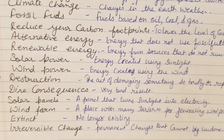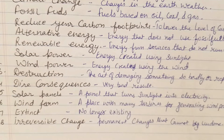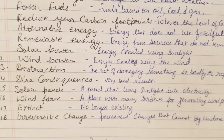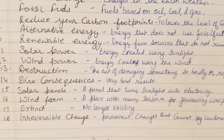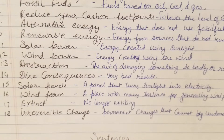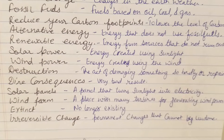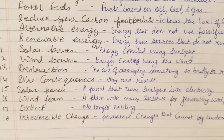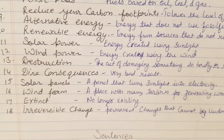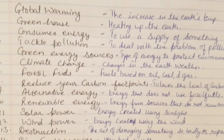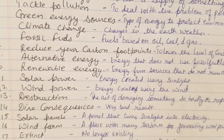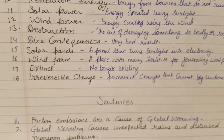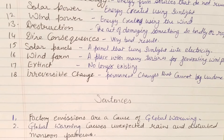Next is irreversible changes. For example: if we don't reduce pollution, the earth will undergo irreversible changes — meaning permanent changes that cannot be undone. These are vocabulary terms that the examiner may ask about, so you must first know their meanings. After that, I will give you useful sentences that you can use anywhere whenever needed.